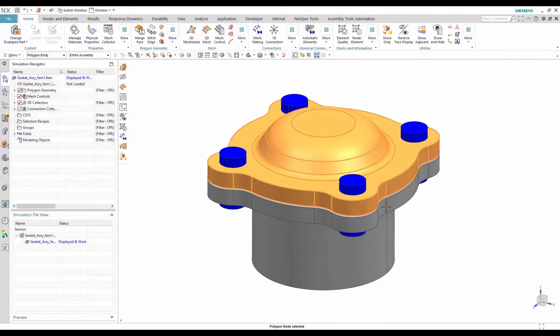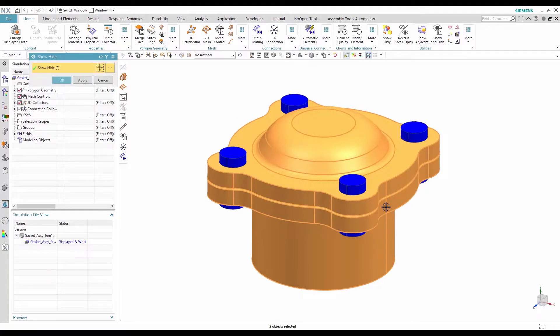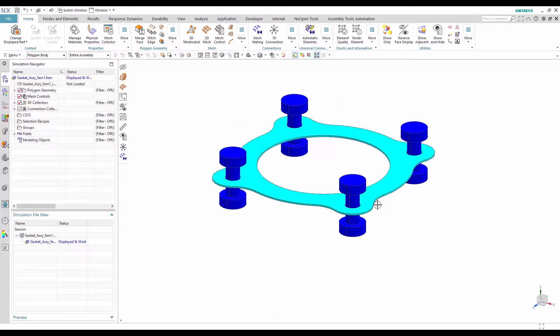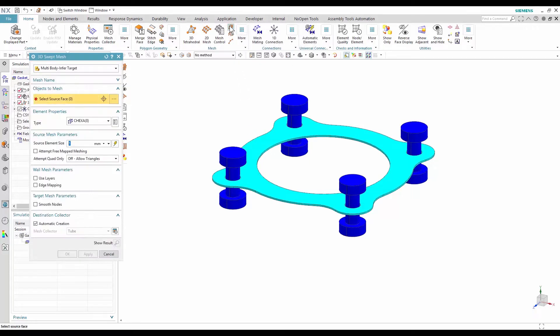You can see in the FEM file the four bolts, the tube, the cap, and the gasket which is squeezed between the tube and the cap. The first thing I do is to mesh the gasket using a 3D swept mesh. The gasket must have only one element through its thickness.